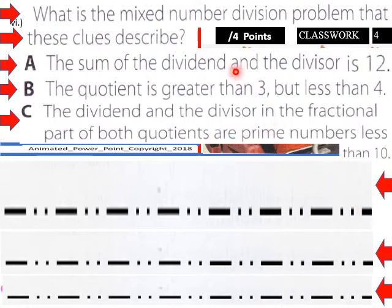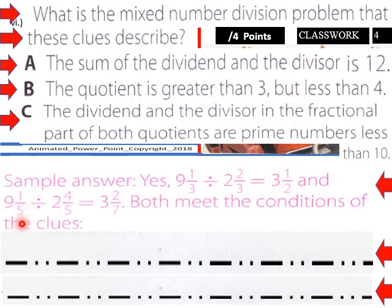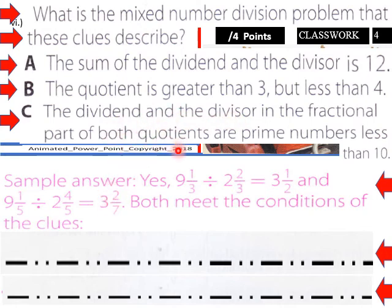Welcome back for the solution to this trick question. One sample answer: nine and one-third divided by two and two-thirds equals three and one-half. The quotient is greater than three but less than four. Another answer: nine and one-fifth divided by two and four-fifths equals three and two-sevenths. Both meet the conditions — five, three, and seven are all prime numbers less than 10, satisfying the clue about fractional parts of both quotients.